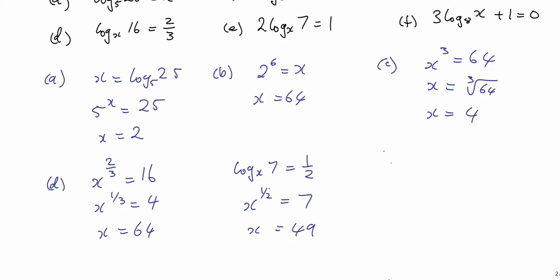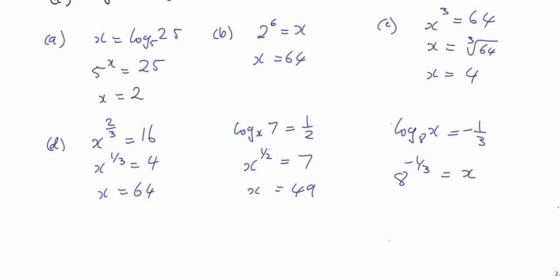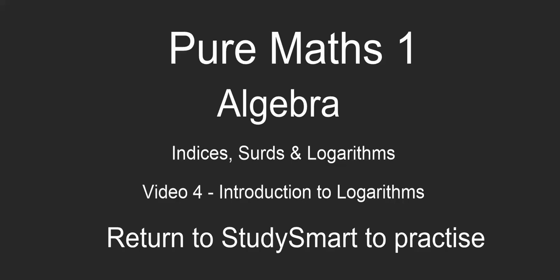Lastly, log x to base 8 plus 1 equals 0, so subtracting 1 and dividing by 3, log of x to base 8 is minus a third. 8 to the power of minus a third equals x. 8 to the minus a third is 1 over 8 to the third, and 8 to the a third is 2, so x is a half.